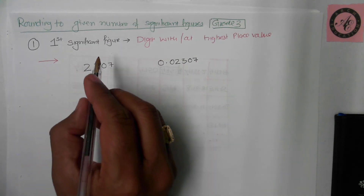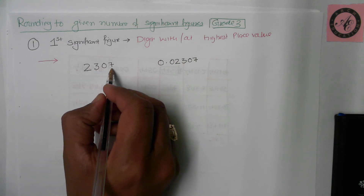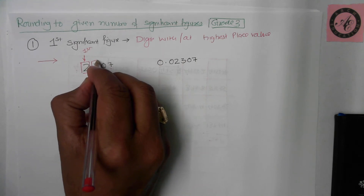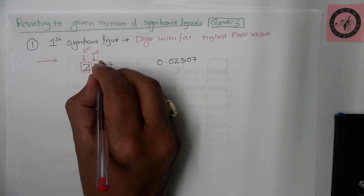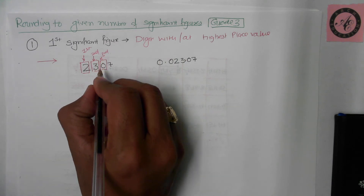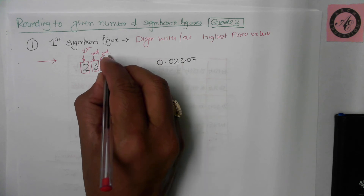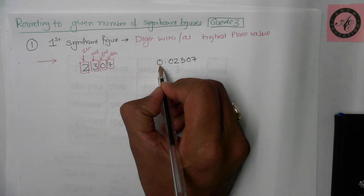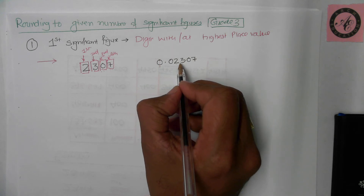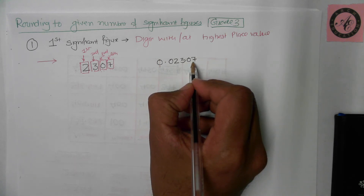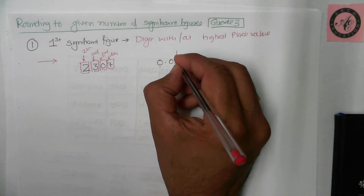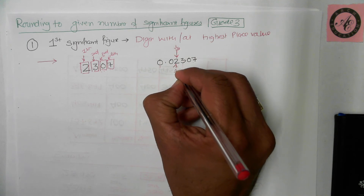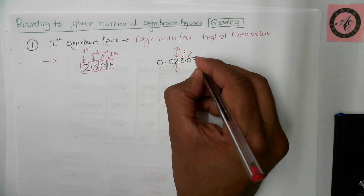For the number 2307: the highest place value is thousands, so two is the first significant digit. Three is the second, zero is the third (tens place), and seven is the fourth significant digit. For a decimal number like 0.0307: the zeros before the three do not hold significant place value, so three (hundredths) becomes the first significant digit, zero is the second, and seven is the third significant digit.